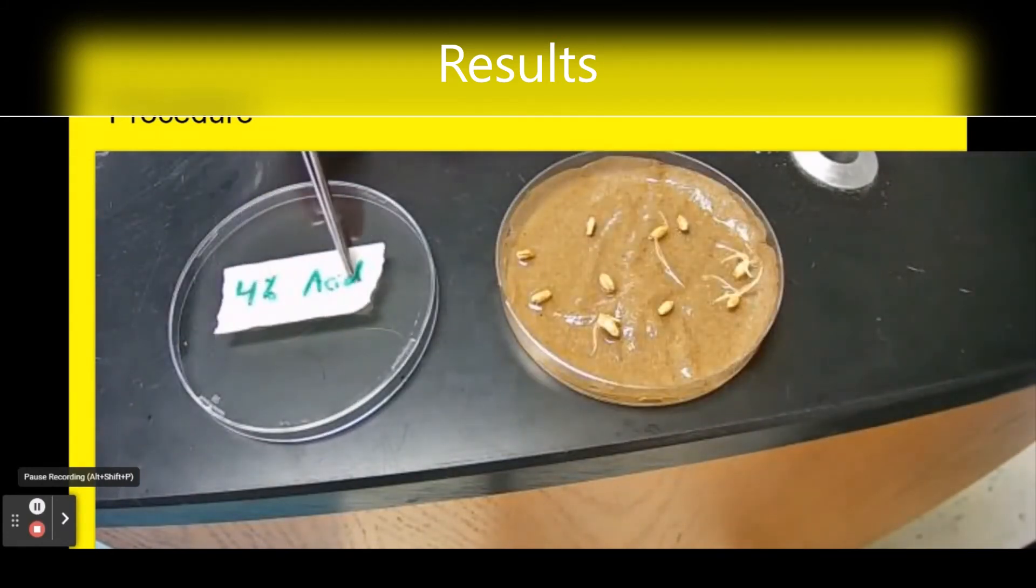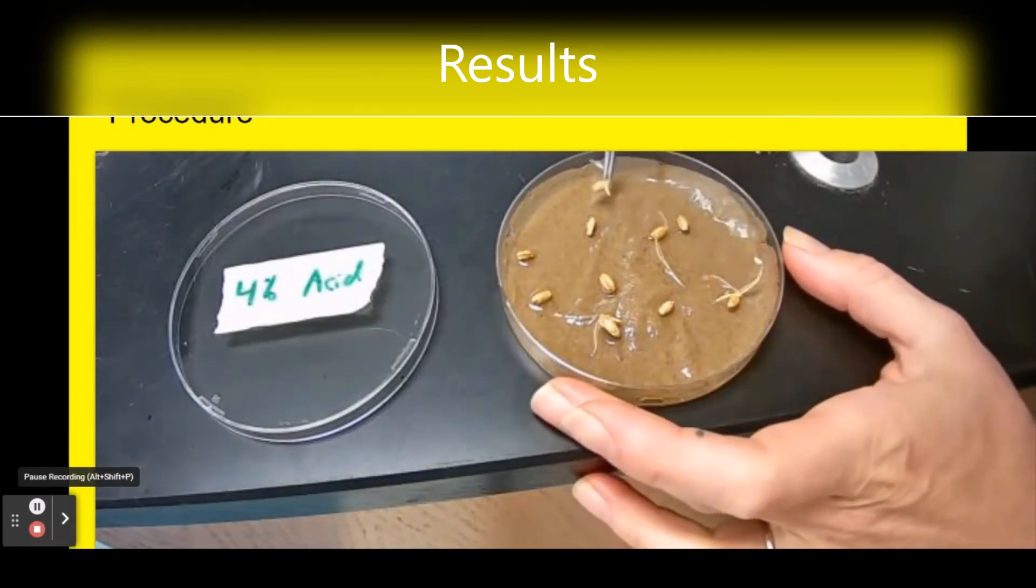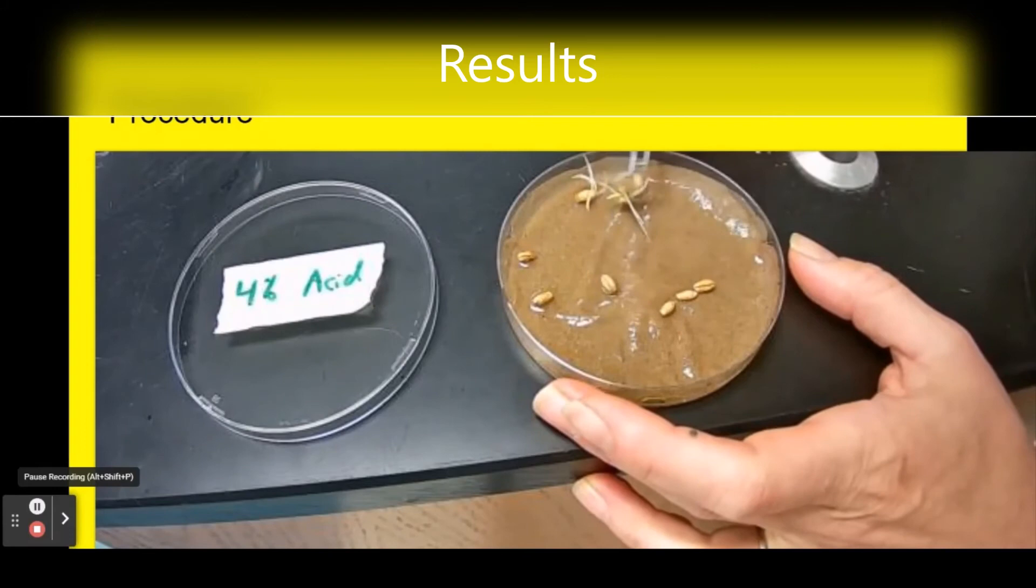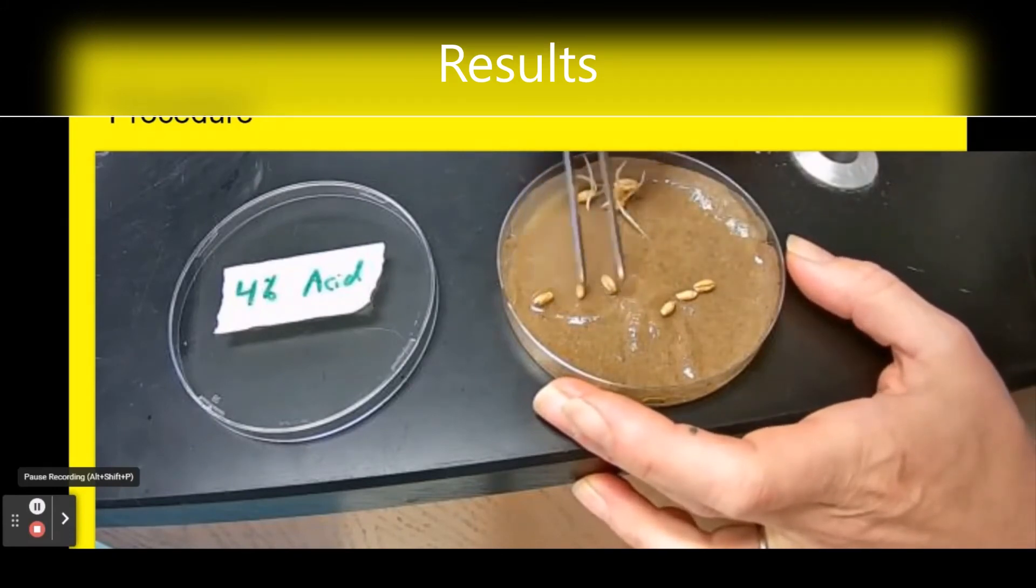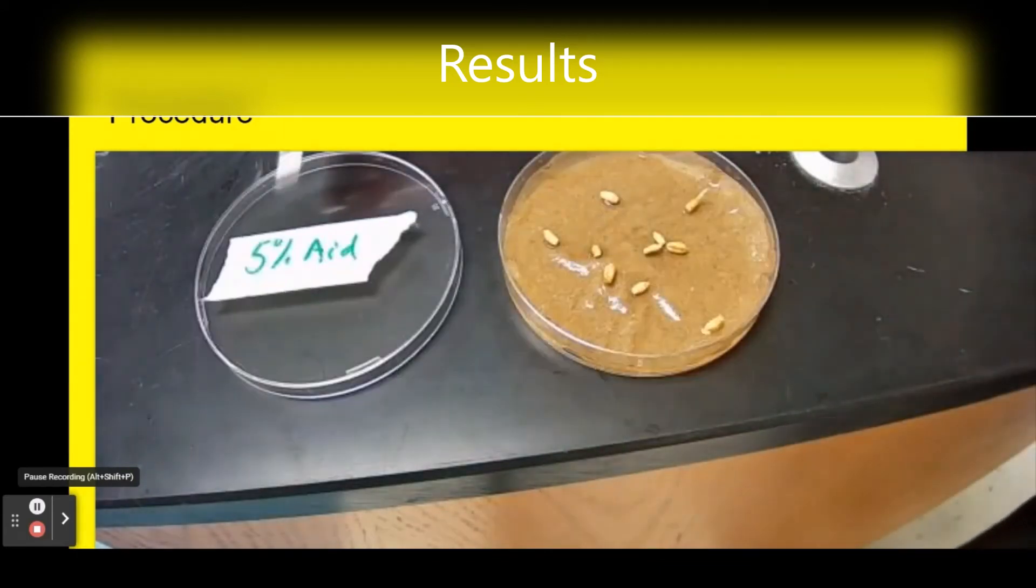Here is our four percent acid solution. We've got one, two, three, four seeds that germinated. It looks like we now have six that did not germinate.